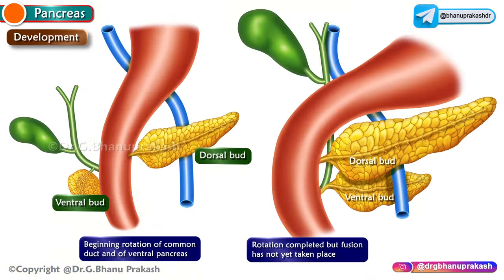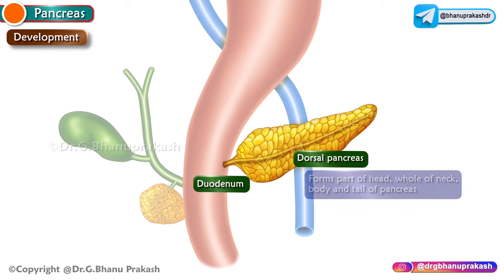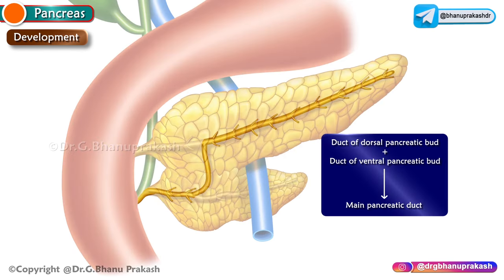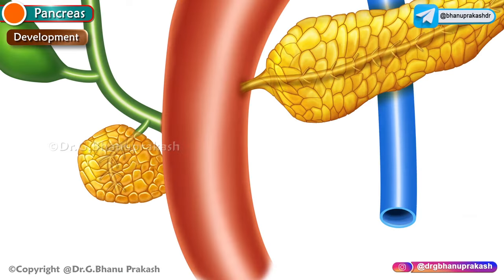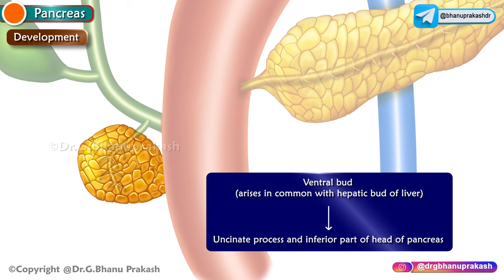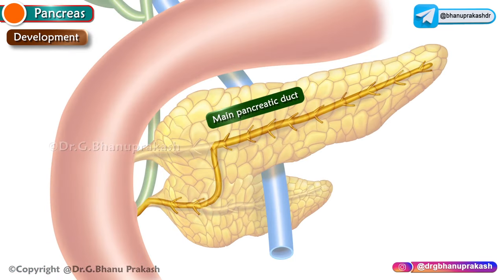The pancreas is developed from two separate buds: dorsal and ventral. The larger dorsal bud arises directly from the duodenum and forms part of the head and the whole of the neck, body, and tail. The duct of the dorsal pancreatic bud fuses with the duct of the ventral bud to form the main pancreatic duct; the remaining part of the dorsal duct forms the accessory pancreatic duct. The smaller ventral bud arises in common with the hepatic bud of the liver and forms the uncinate process and inferior part of the head. The duct of the ventral bud opens into the dorsal pancreatic duct near its neck to form the main pancreatic duct opening into the duodenum.